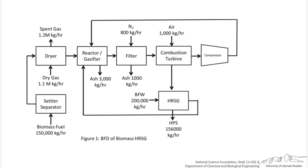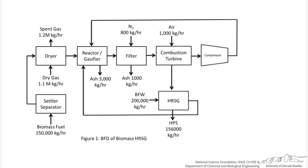I noticed a few. First, the flow in this diagram is not left to right — it has more of an inverted U shape. This is a bit confusing because when you first look at this diagram, you might not be sure where it starts and ends. The dry gas and air streams, and some of these outlet streams, are flowing in the same or opposite direction as the inlet biomass stream, so that makes this diagram confusing.